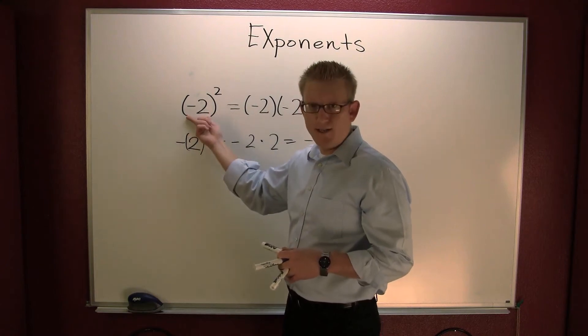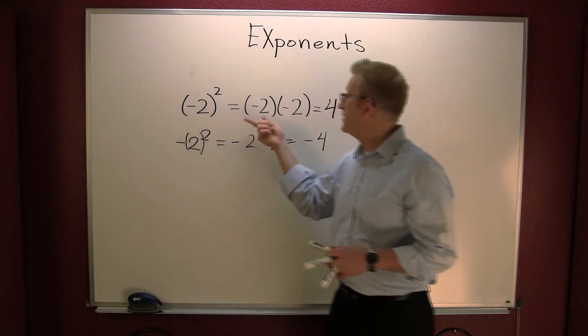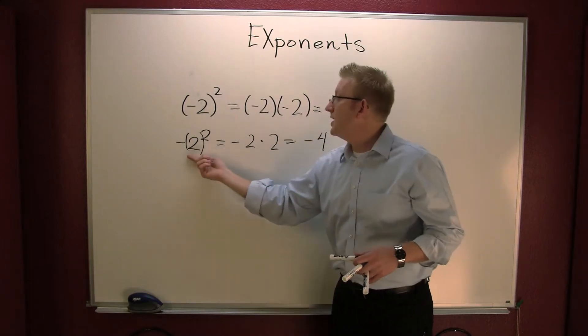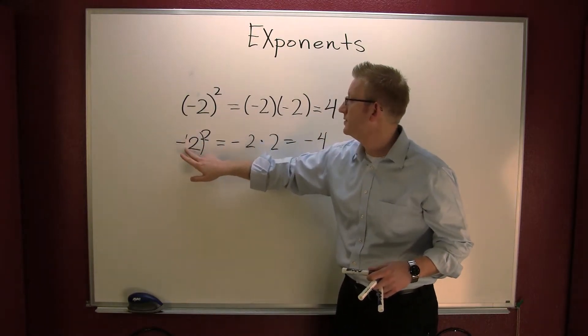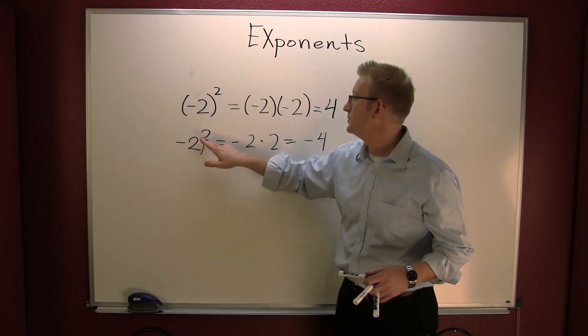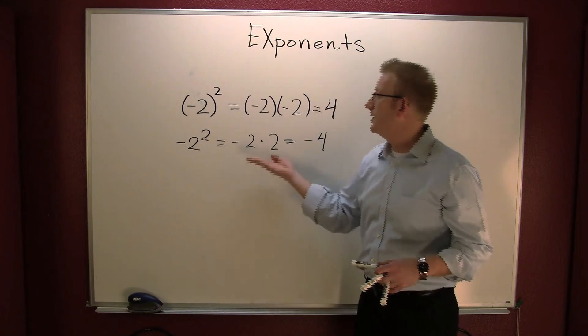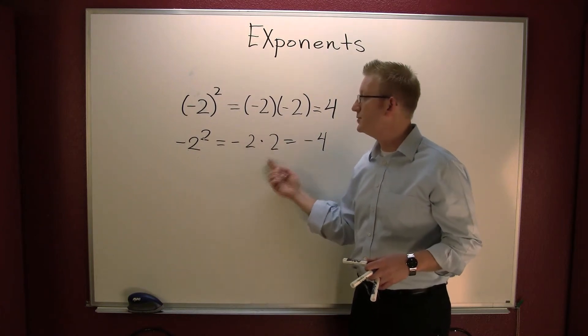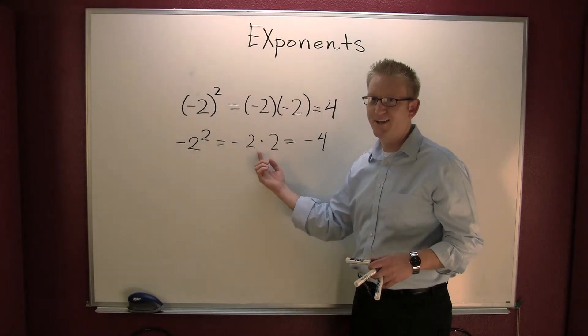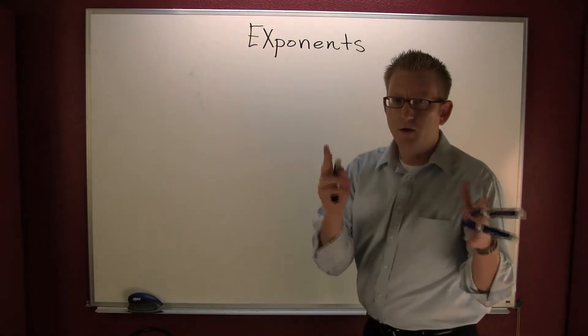If the minus is inside the parentheses, that's a repeated copy of minus two. If you're given minus two to the second power, that's two times two, and then minus one times that. Okay. All right.